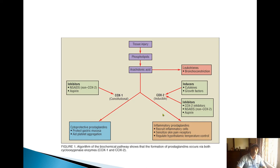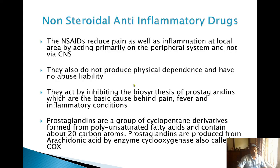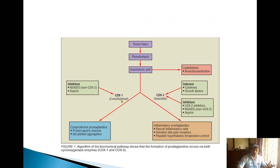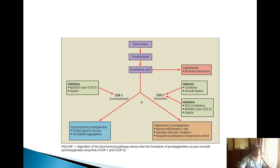Arachidonic acid is converted to prostaglandins by the cyclooxygenase enzyme — COX — which is the main cause of inflammatory conditions. There are two types: COX-1 and COX-2. COX-2 specific NSAIDs are the newer generation and are more widely used now. This is the mechanism of action of NSAIDs.